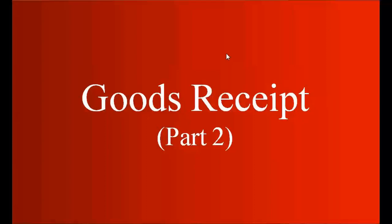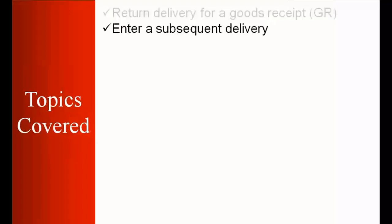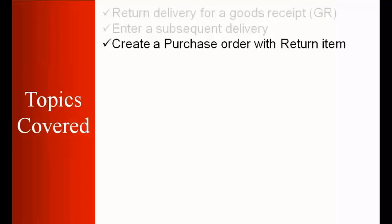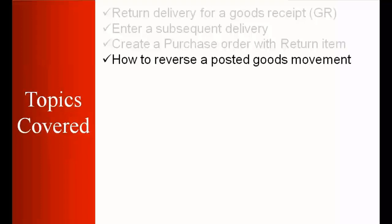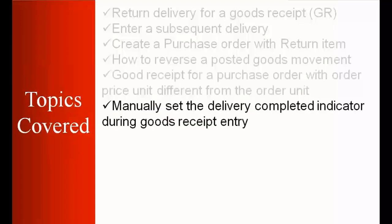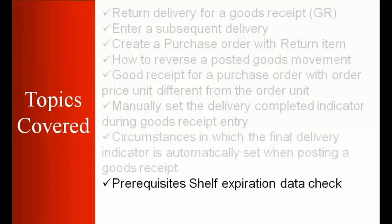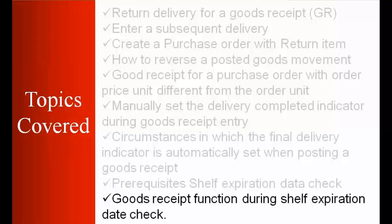Welcome to today's class. We'll be starting the second part of goods received. The topics we're going to cover today are: return delivery for goods received, entering a subsequent delivery, creating a purchase order with the return item, how to reverse a posted goods movement, goods received for a purchase order with order price different from the order unit, and manually setting the delivery completed indicator during goods received entry.